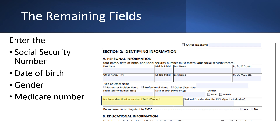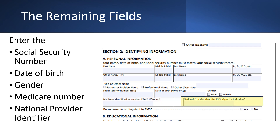Move down a row and in the left box, enter the Medicare number. If you're newly enrolling with Medicare, then you will not have a number to enter here — this will be provided after your enrollment is complete. On the same row in the right box, enter the provider's National Provider Identifier. Be sure to enter the provider's individual National Provider Identifier, not a Group or Business National Provider Identifier.